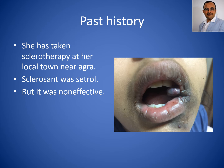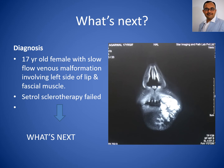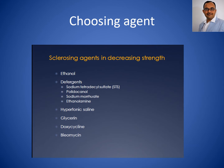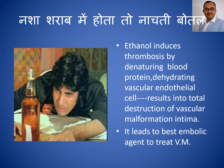Here is the list of sclerosing agents with reducing strength, where ethanol is the strongest one and bleomycin is the weakest one. I have selected absolute ethanol to treat this patient. Absolute ethanol is a very powerful embolizing agent to treat vascular malformation.